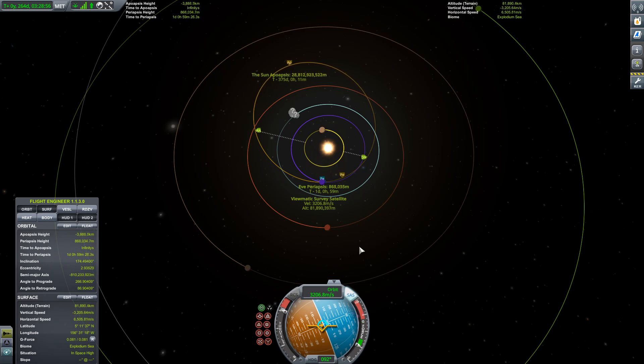Now another really important factor when computing gravity assists is that the amount of turn, the amount of deflection you can get by flying close to a body depends upon the mass of the body, it depends upon the speed at which you are going. And there is a point at which when you get close to the body in question, you cannot turn anymore because you will end up hitting the object.